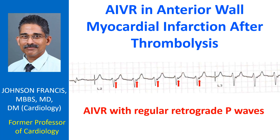Accelerated idioventricular rhythm with regular retrograde P waves. Retrograde P waves are seen just after the QRS in lead 2 and lead 3. The P waves are not that evident in lead 1.